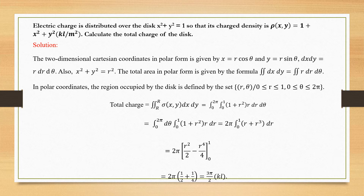dx dy is written as r dr dθ. The outer integral belongs to dθ, so θ varies from 0 to 2π, and the inner integral from 0 to 1 belongs to r. So we have the integral from 0 to 2π of dθ times the integral from 0 to 1 of (1 + r²)·r dr. Multiplying through gives r + r³ dr.